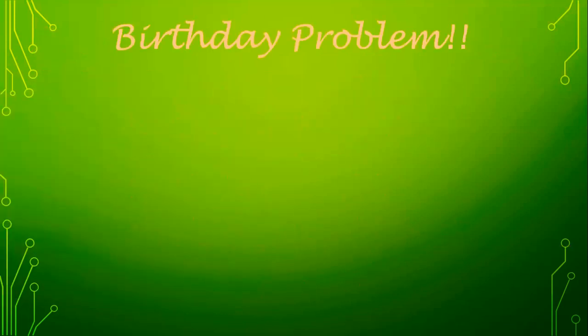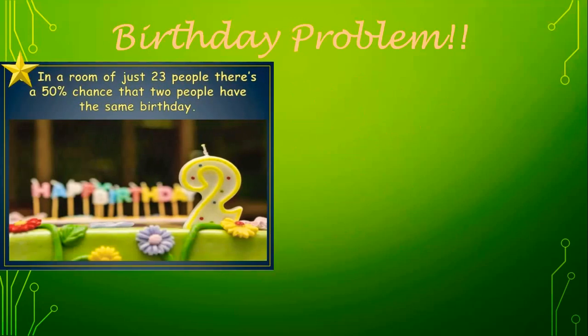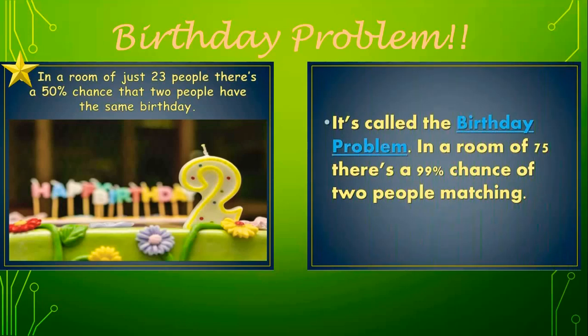Next, the birthday problem. This problem is actually related to permutation and combination, which you will study in detail in higher classes. In a room of just 23 people, there is a 50% chance that 2 people have the same birthday. In the same manner, in a room of 75 people, there is a 99% chance that 2 people share the same birthday.